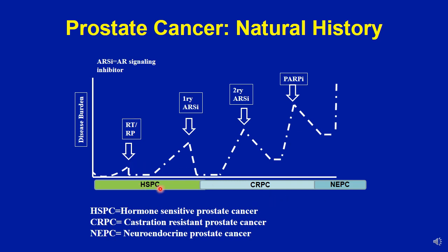Prostate cancers are typically hormone sensitive or hormone naive. At some point when anti-androgen treatment is instituted, some of these prostate cancers eventually become castration resistant or androgen independent, and neuroendocrine prostate cancer is considered to be the last phase of the prostate cancer progression cycle. That is why neuroendocrine differentiation in prostate cancer is associated with aggressive disease, treated with multi-modality treatment specifically chemotherapy, and the prognosis is very poor.